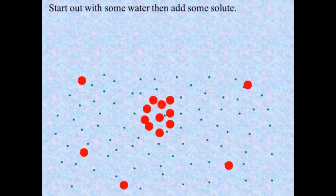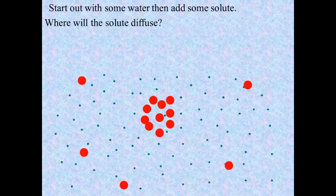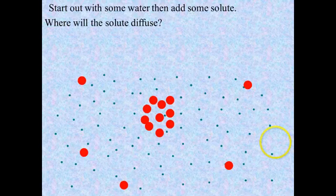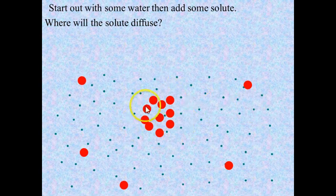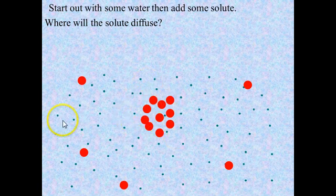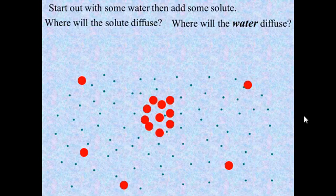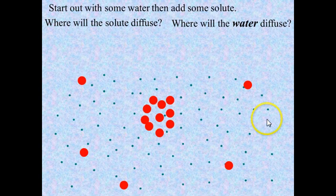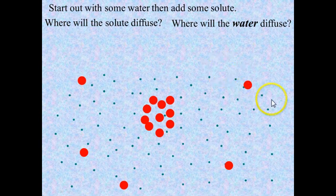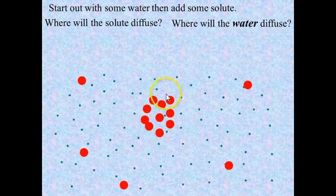Next, we'll start off again with some water, then add some solute, and ask ourselves where will the solute go. It's pretty clear we have a very high concentration of solute in the center, so the solute is going to diffuse outward, away from this high concentration in the middle. The water has a higher concentration outside, out at the edges of this area, so the water is going to want to diffuse inward. You can see in this area there are very few water molecules — they're all displaced by the solute molecules.